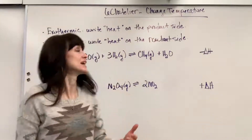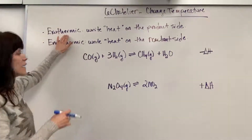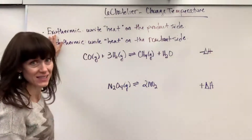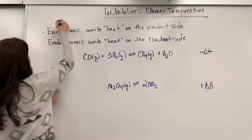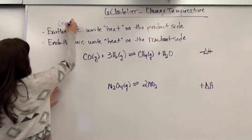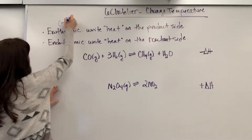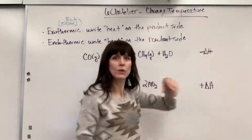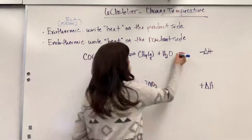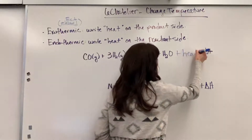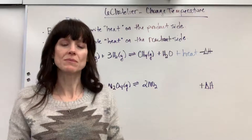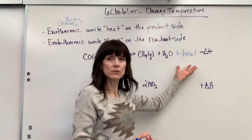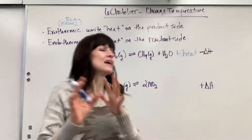Exothermic: energy is released. So when we have a negative delta H, write plus heat on the product side. When a system is exothermic, it really is as if heat energy is one of the products — it releases energy at the end. Remember, it's a net energy. It takes energy to break bonds, but when new bonds are formed it releases energy. The energy to break bonds is less than the energy released when bonds form; that difference gives us a net release.